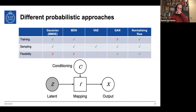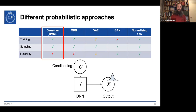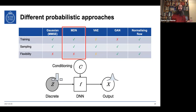The simplest case is predicting Gaussian properties directly from a conditioning input and adding Gaussian noise — this is basically predicting the average, which is terrible. Even though it's easy to train and fast to sample, it's not flexible enough. Adding a discrete latent variable gives a mixture density network, but these still don't produce sufficiently natural motion.